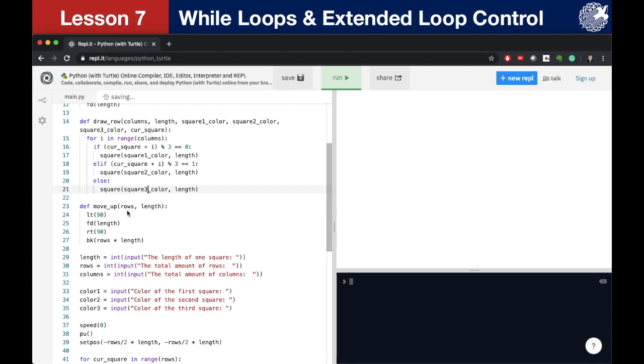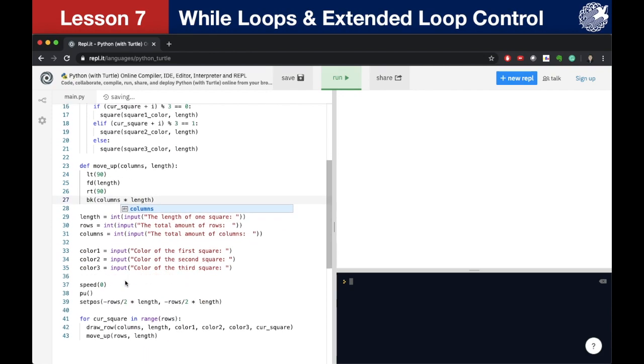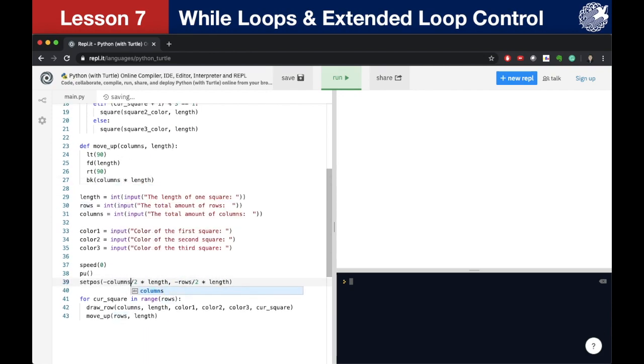But what about the moveUp function? Which variable should we use there? Rows or columns? You can notice that we are using the backward command to go back for the length of one row in our moveUp function. And because we have used the columns variable to draw one row, we must use our columns variable one more time in our moveUp function.